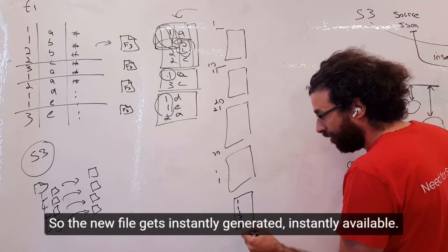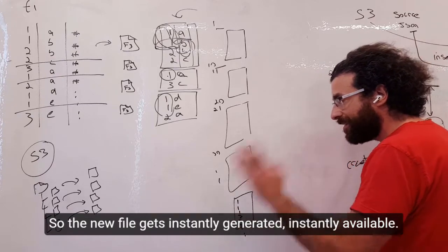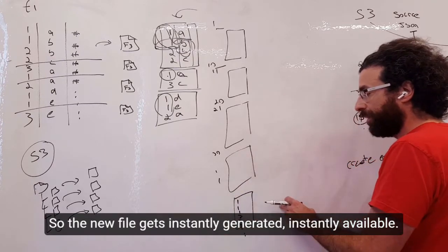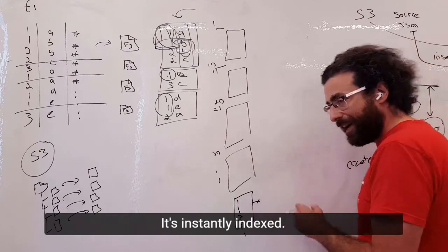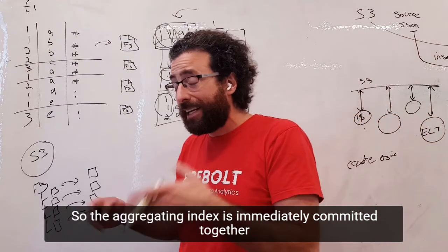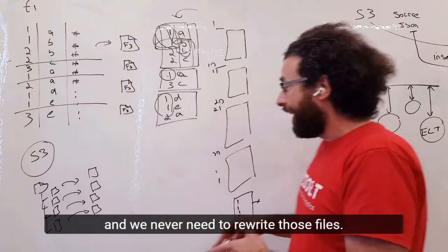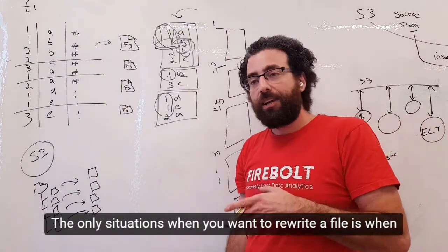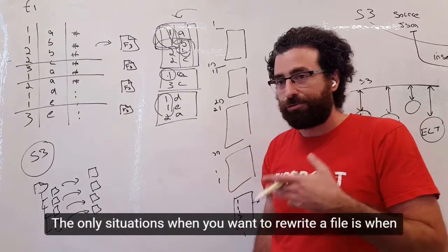New values in it. So the new file gets instantly generated, it's instantly available, it's instantly indexed. The aggregating index is immediately committed together, and we never need to rewrite those files.